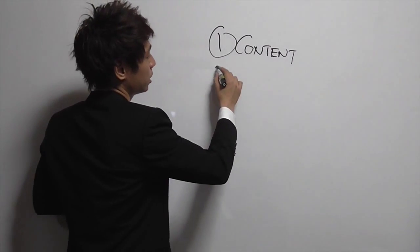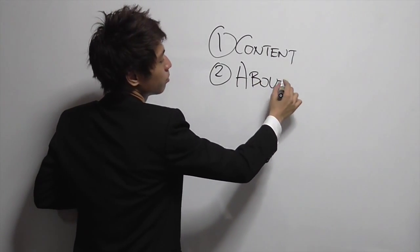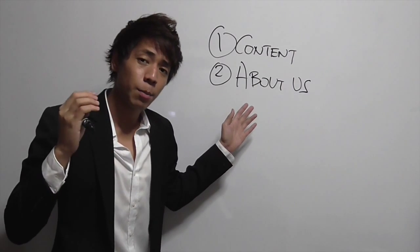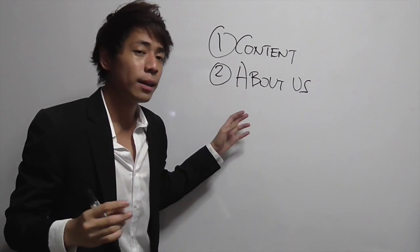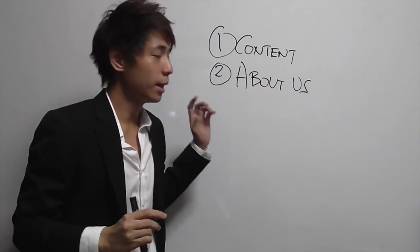The second main factor is actually having an About Us page. Google wants to know what type of website you are running, and that's why you have to have a brief description in the About Us page.